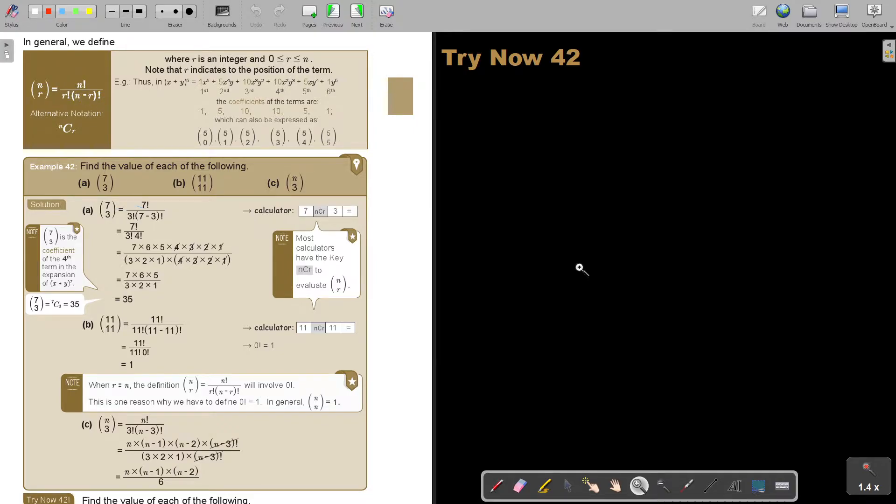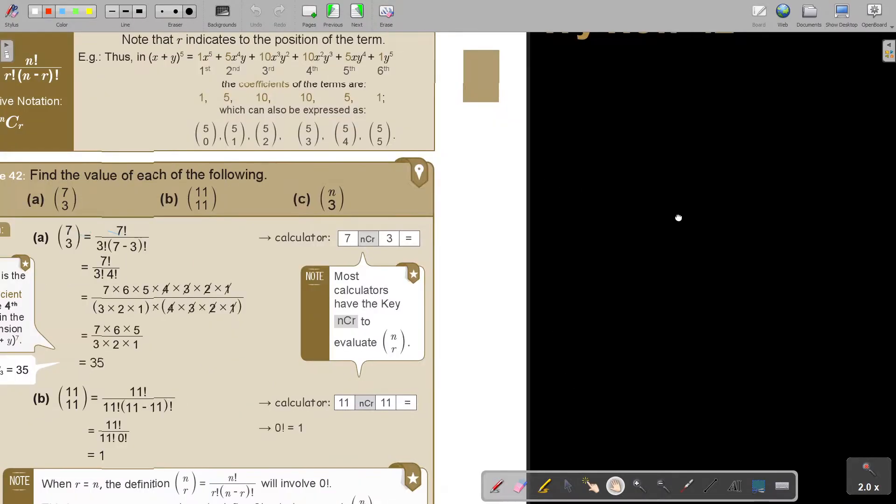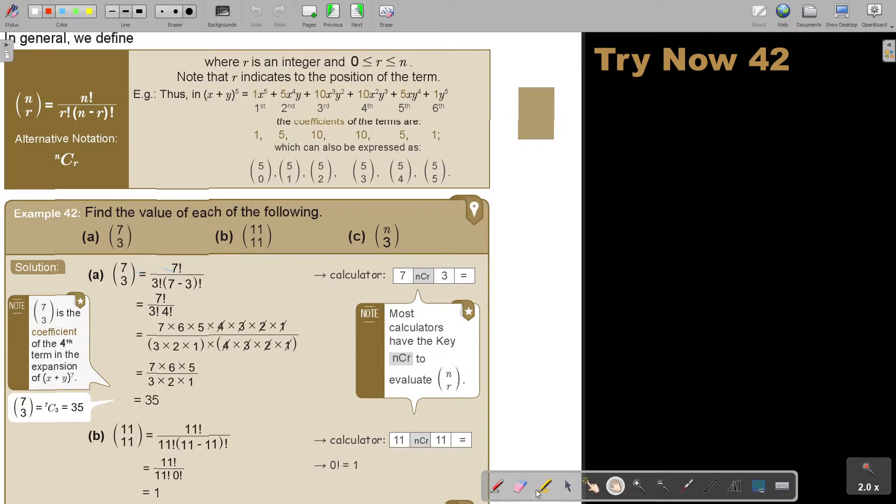Now, I'm going to show you how I'm going to change it. Where R is an integer and it can be 0 or it can be up to N, starting from 0, up to the value of N. Note that R relates to the position of the term. Because we start with 0, it's actually R plus 1 that will indicate the position.